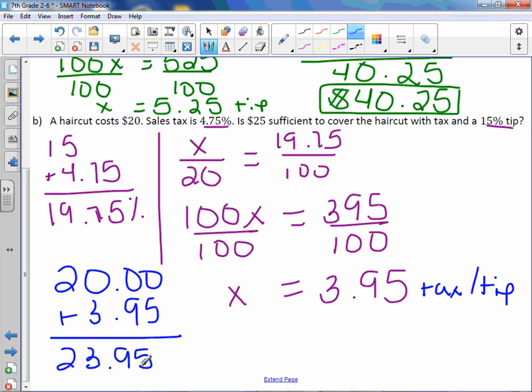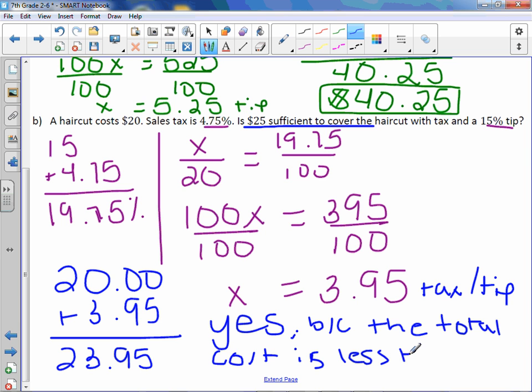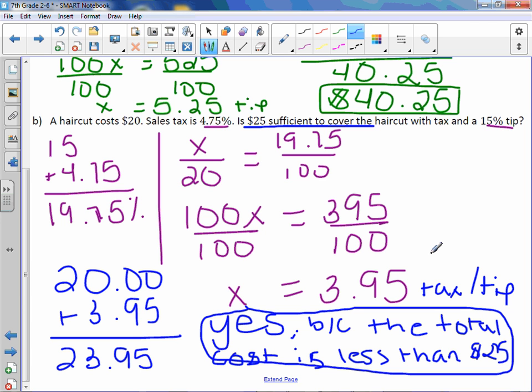Now, the question doesn't ask how much. It's asking is $25 sufficient to cover the haircut with tax and tip. So if it costs $23.95 and we have $25, do we have enough? Yes, because the total cost is less than $25.